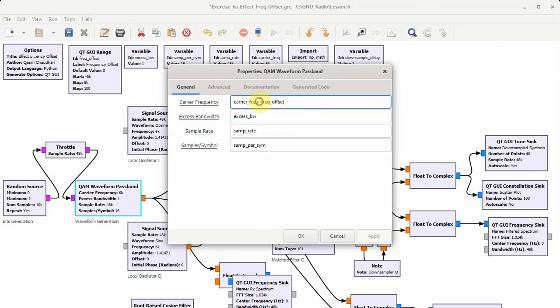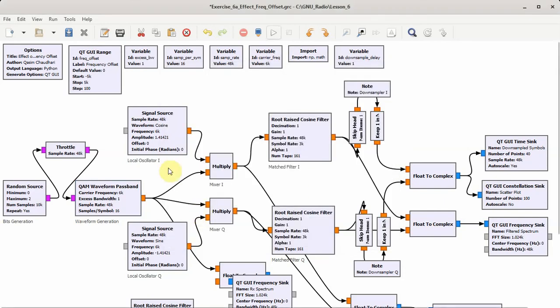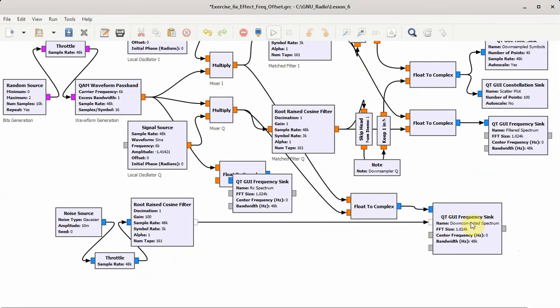However, the carrier frequency introduces an additional factor which is frequency offset. This is the local oscillator I and Q arms and the down-convert signal to baseband. The flow graph looks a little cluttered but this is just flow to complex and the frequency sync so that we can see the receive spectrum before down conversion. Then we can see the receive spectrum after down conversion, so we can compare the two as well.